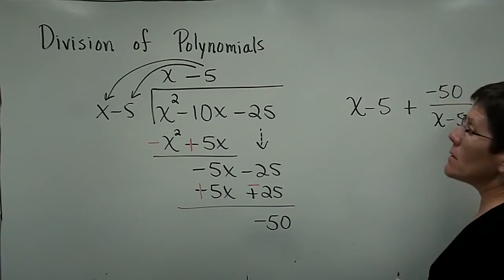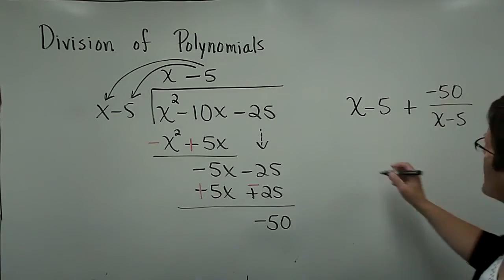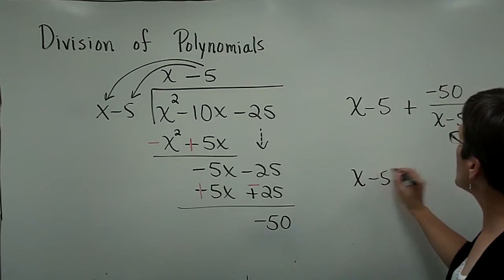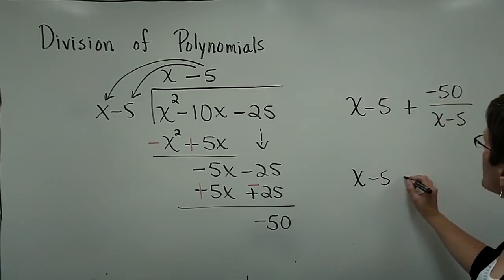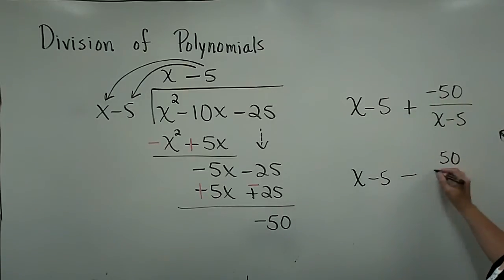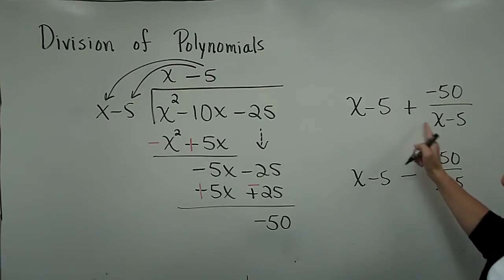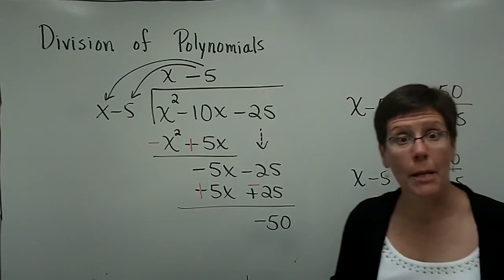You can write it like this or you can also, plus a negative is the same thing as minus 50 over x minus 5. So either way, I prefer this way. And the computer should accept either.